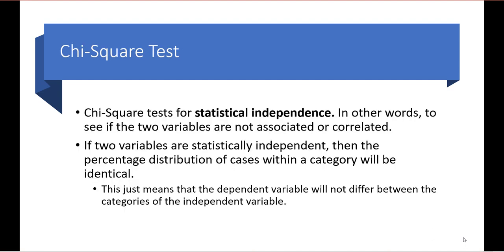The chi-square test tests for statistical independence — in other words, to see if the two variables we are looking at are not associated or correlated. If two variables are statistically independent, then the percentage distribution of cases within a category will be identical, meaning the dependent variable will not differ between the categories of the independent variable.